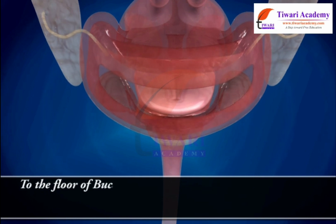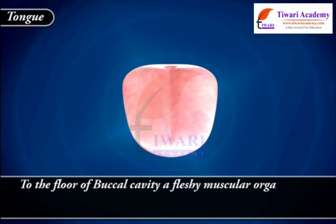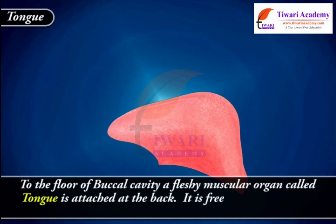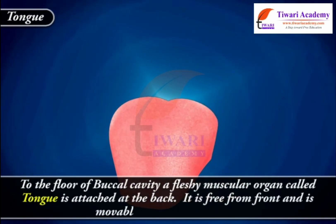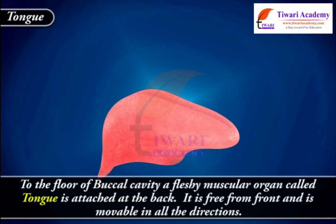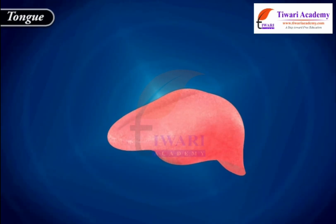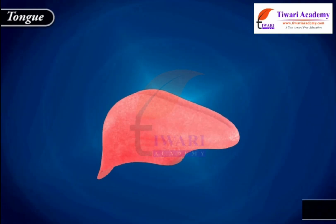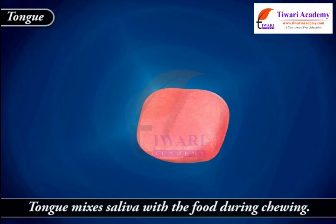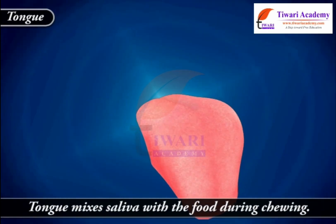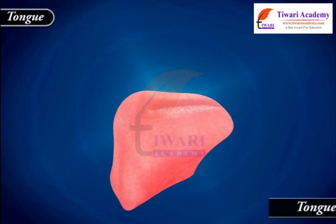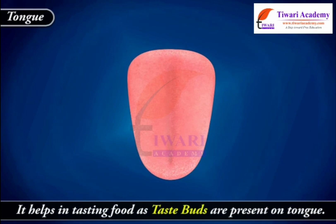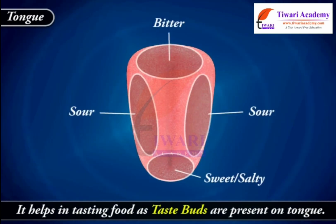To the floor of the buccal cavity, a fleshy muscular organ called the tongue is attached at the back. It is free from the front and is movable in all directions. Tongue helps in swallowing food, mixes saliva with food during chewing, and helps in tasting food as taste buds are present on the tongue.